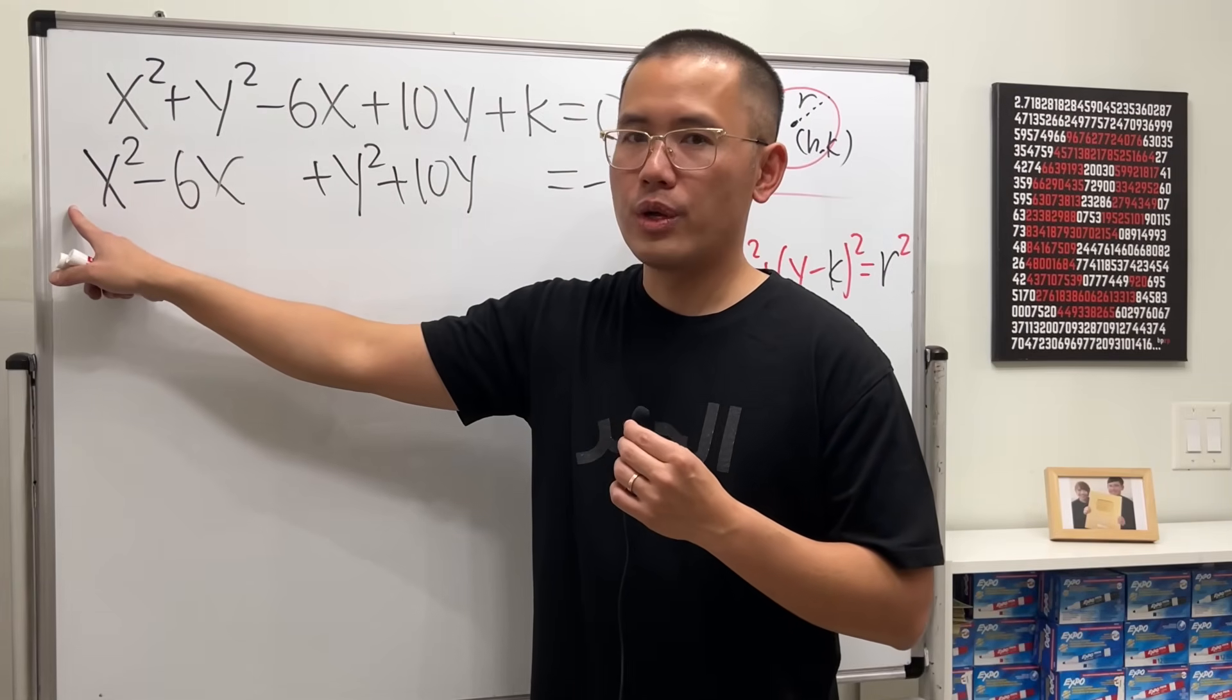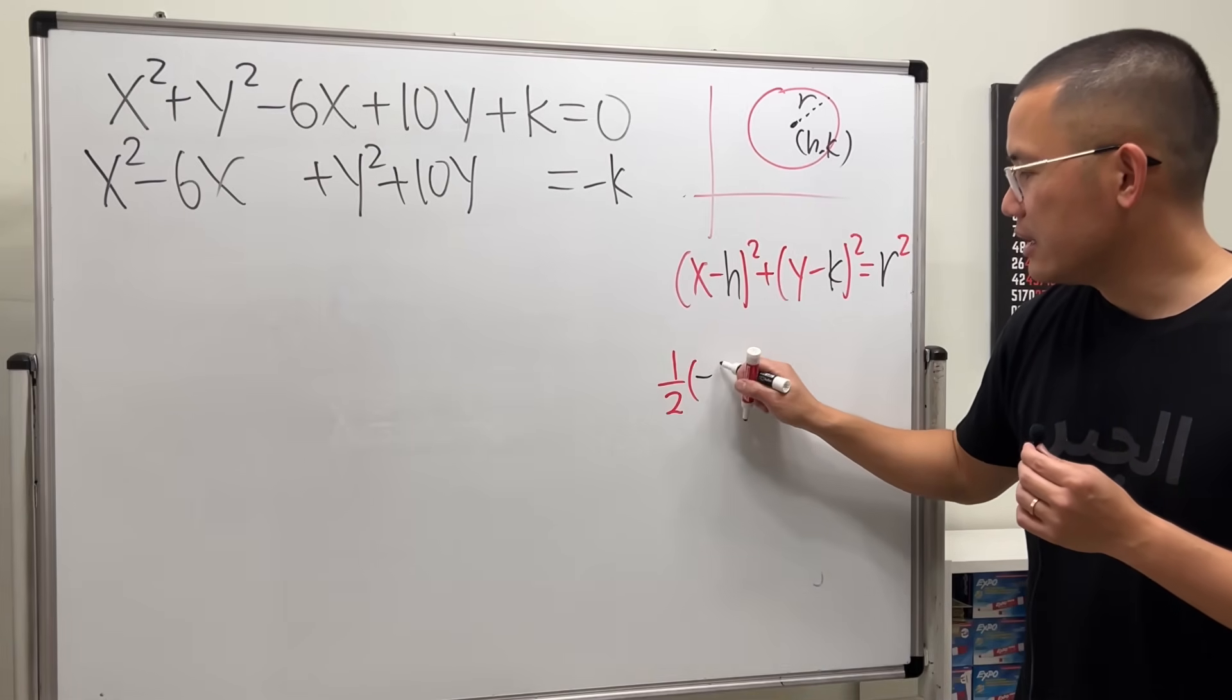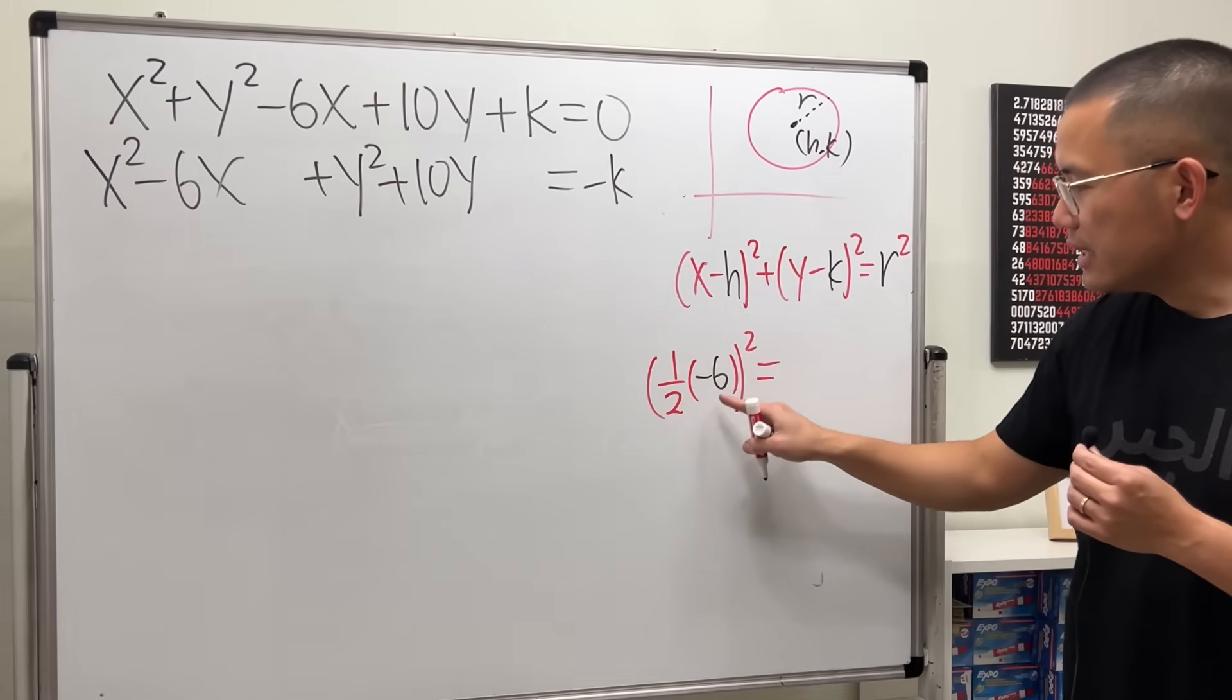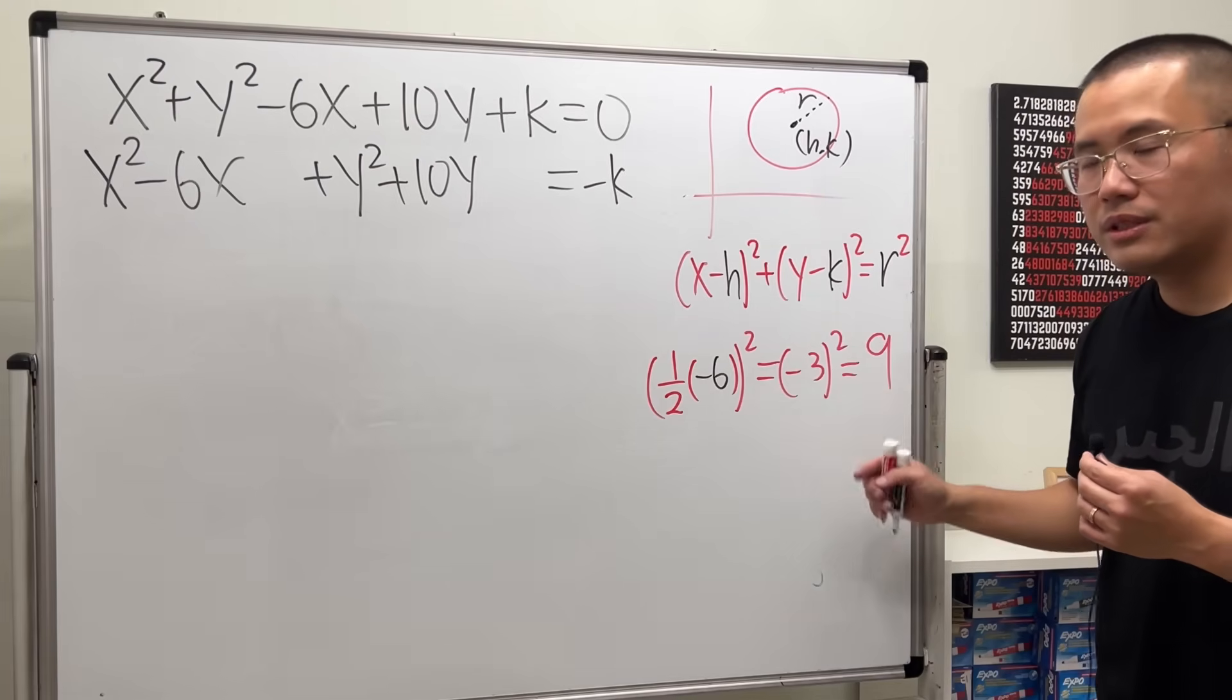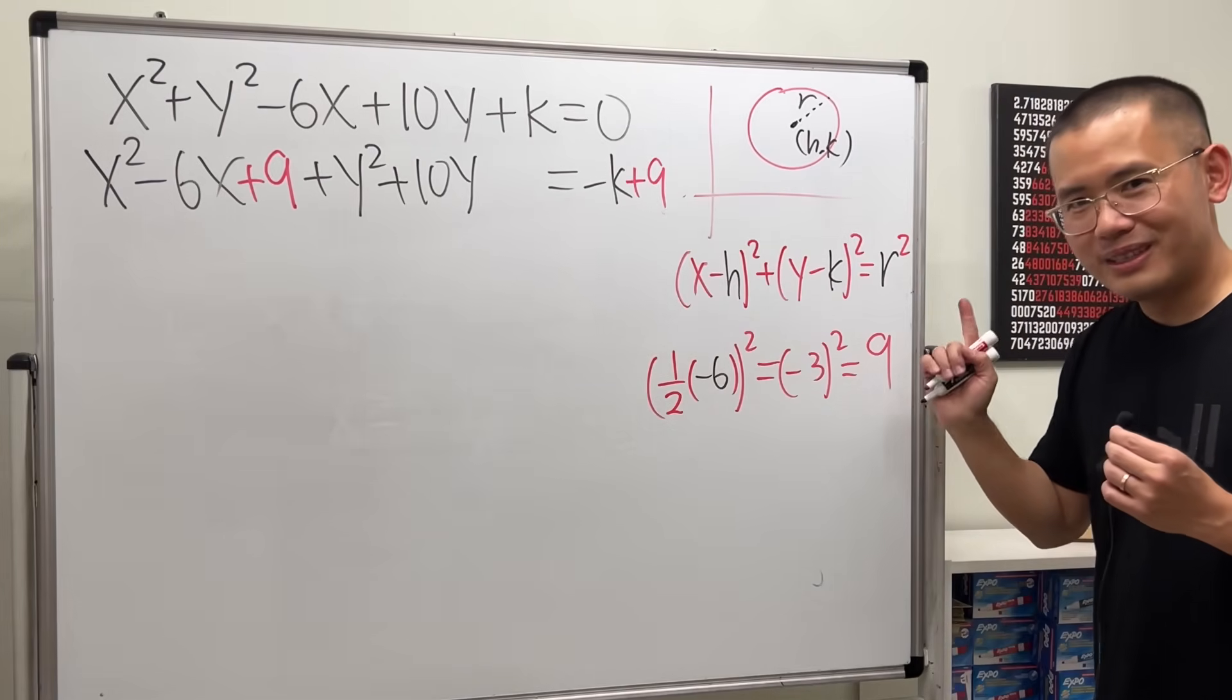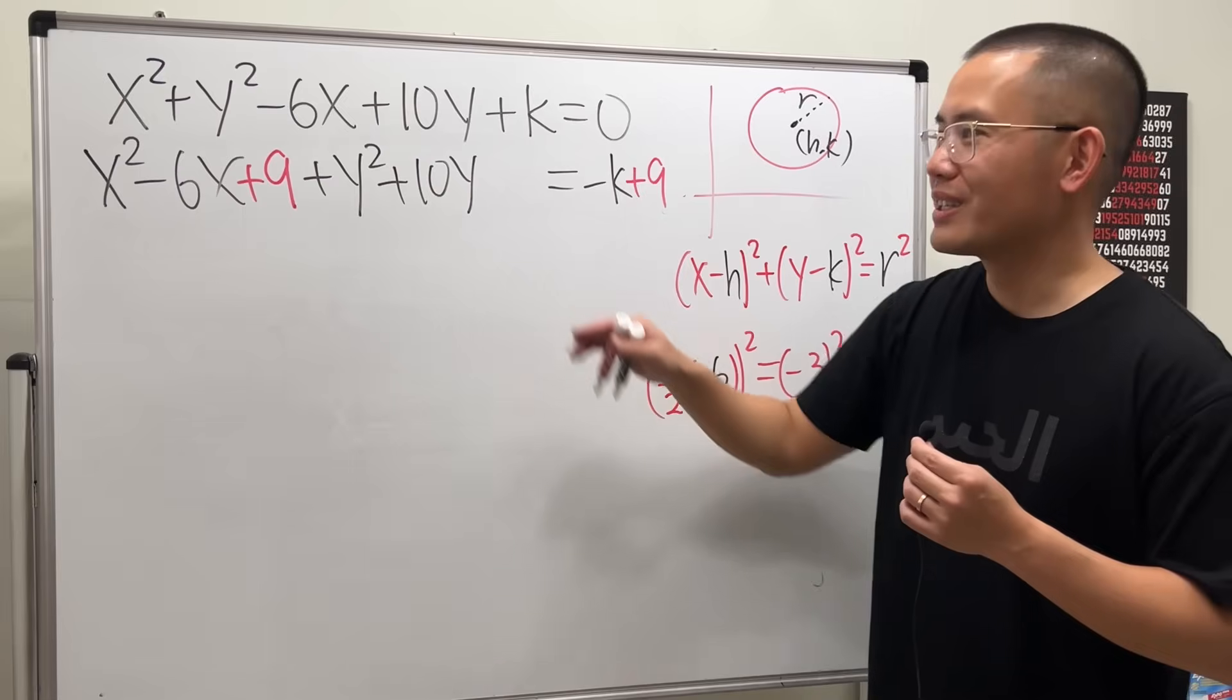First, we have 1x squared already. So we can proceed by looking at the coefficient of x and take half of it. So I'll write it down here. Half of negative 6 and then put this in a parentheses and then square that. Inside here, we have negative 3. Square that, we get positive 9. So we will add this number to both sides. Let's put a plus 9 here and also put a plus 9 here. I call this number the magic number because this number is so magical. It's going to make the first three terms a perfect square.